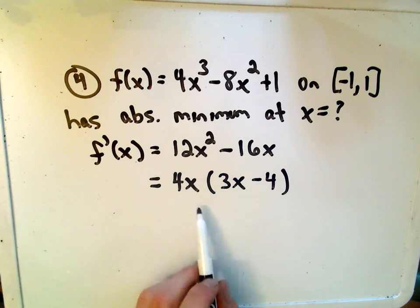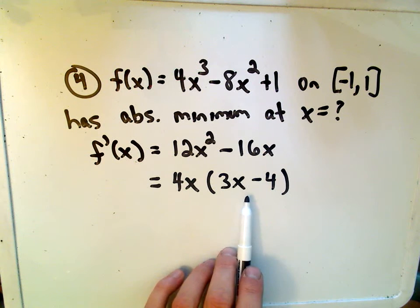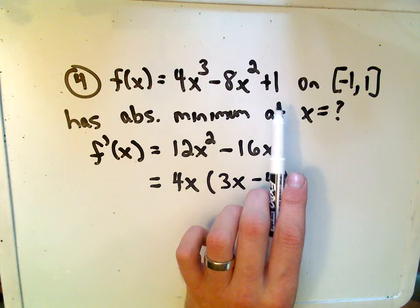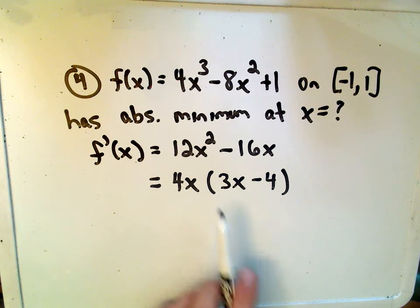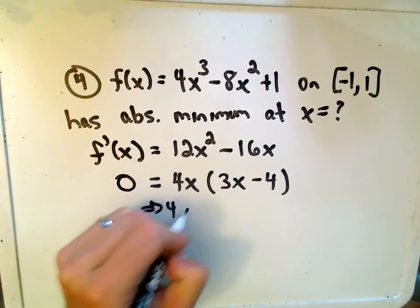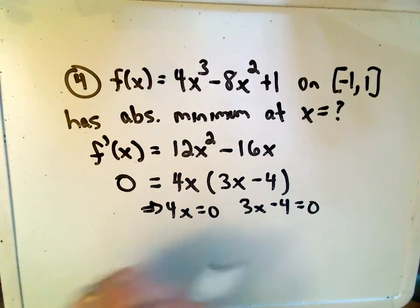So, we want to find critical values. We want to find where the derivative is either equal to 0 or undefined, and those values have to be in the domain. This is a polynomial, it's defined everywhere. It's also continuous everywhere, but in this case, it's not going to be undefined anywhere, so all we have to do is set it equal to 0, and that means simply that 4x equals 0, 3x minus 4 equals 0.